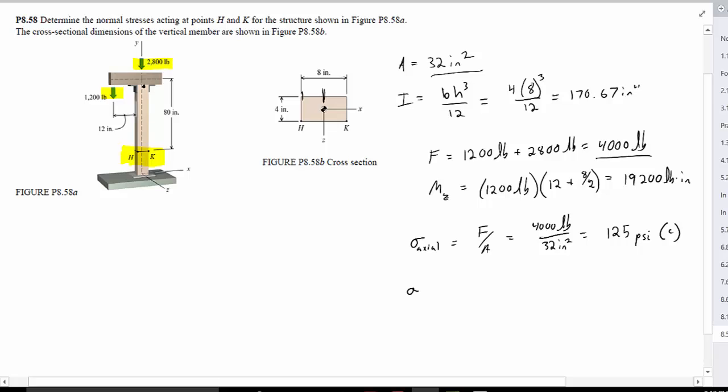So now we can determine our bending stress, which will be the moment we calculated earlier multiplied to our c value in our moment of inertia. So this will be our bending moment, 19,200 pound inches, multiplied to c, but what's c?